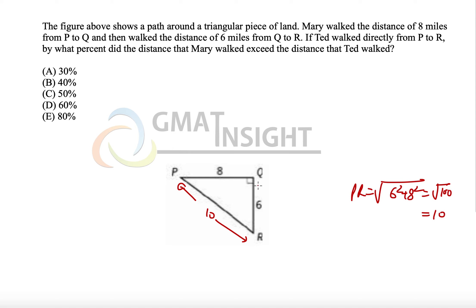However, we should just learn that this is the most frequently used Pythagorean triplet in the GMAT. Therefore, we should be able to quickly identify that the third side will be 10 in this case.